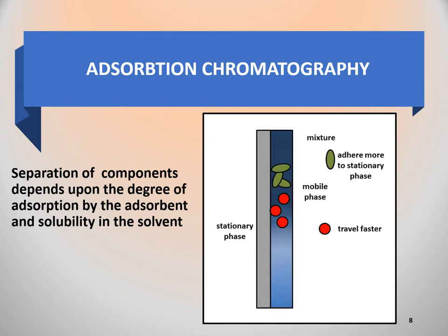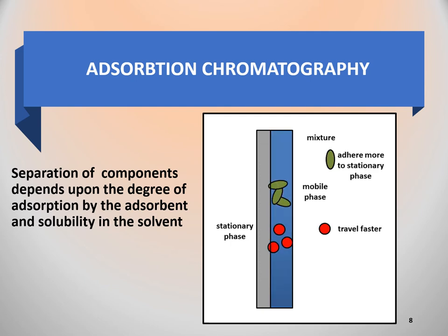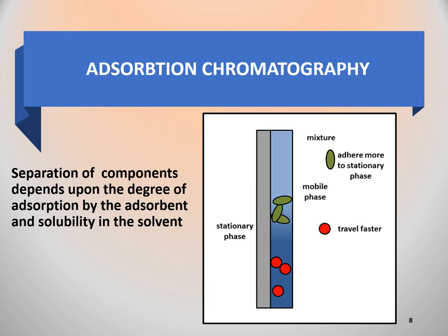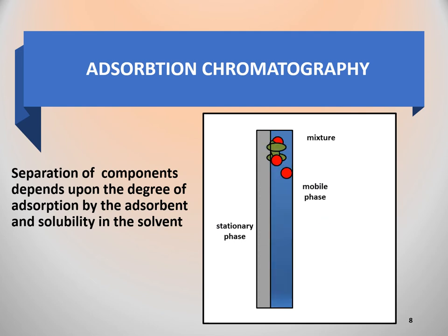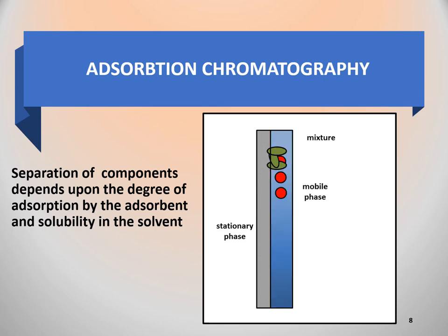In adsorption chromatography, components are separated on the basis of the degree of adsorption of the components by the adsorbent and solubility of the components in the solvent. It can be carried out in both the column and thin layer modes. These concepts have already been discussed in the previous slides.